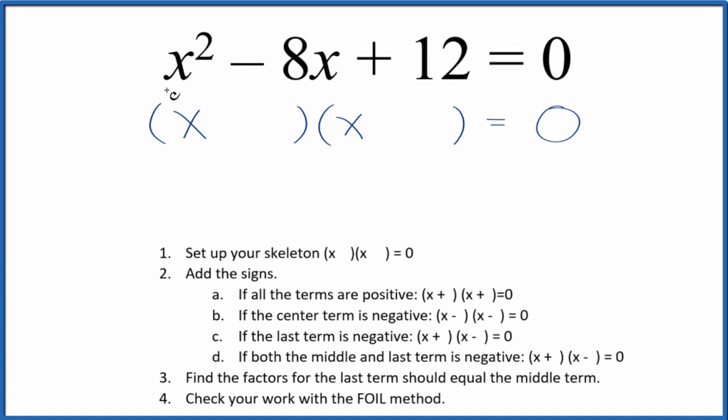Let's factor the equation x squared minus 8x plus 12. So the first thing we want to do is set up a skeleton equation. This is our skeleton equation right here.